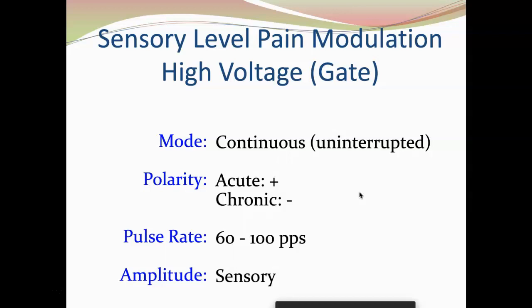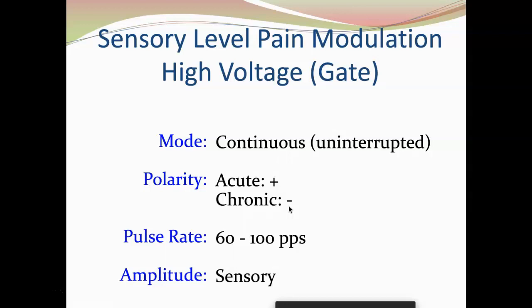For pain modulation using the gate control theory, we want to create a continuous mode if your device allows it. If the pain is acute — within zero to 72 hours — then you want the polarity to be positive. If the pain is chronic, lasting outside of that 72 hours, you want that polarity to be negative. This is the first time we're seeing the polarity of a device coming into play with a meaningful physiological effect. Pulse rate should be 60 to 100 pulses per second, and amplitude should be at sensory level — the patient should at least feel the electrical stimulation.